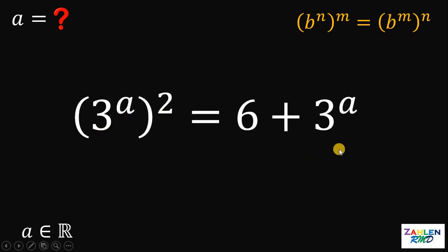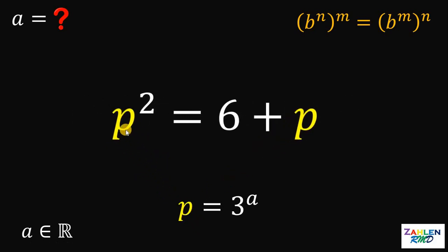Since we have the same term 3 raised to a, we can replace this with another variable and let's call this as p. Let's replace all 3 raised to a with p. This will give us p squared equals 6 plus p.